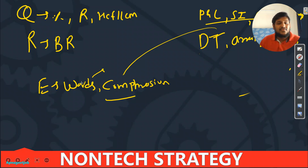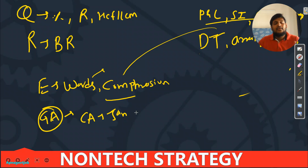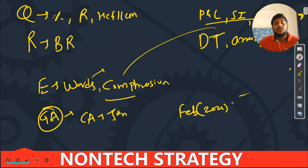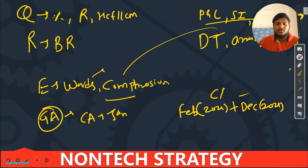For General Awareness: in the last phase I told you to do January 2022 current affairs. Now we will add February 2022 plus December 2021 side by side. We will skip History, Geography, and all that static stuff for now and stick to current affairs only. No need to worry about extra material.